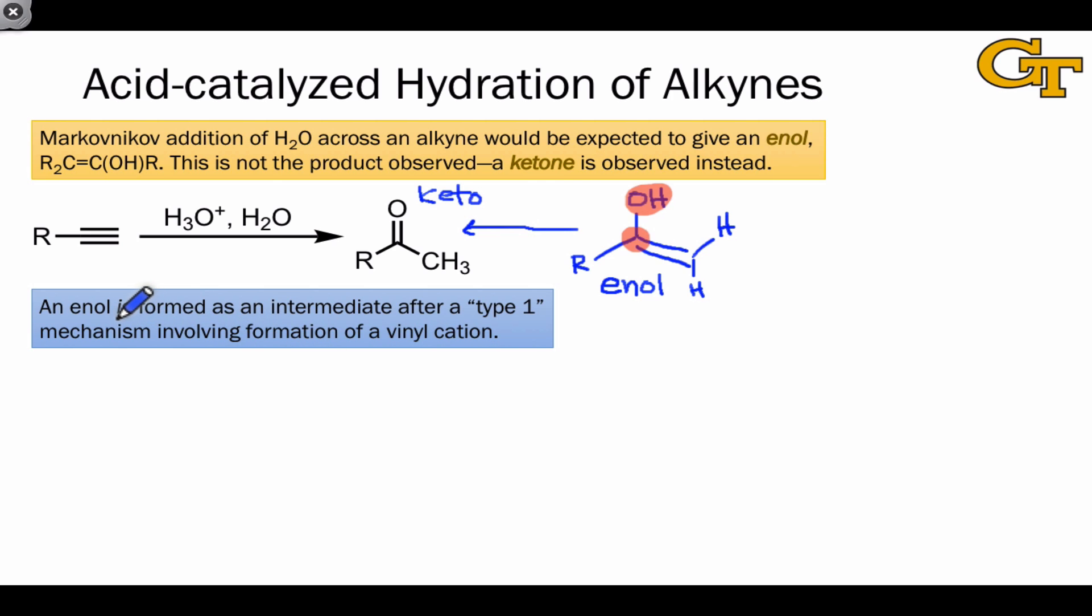The enol is formed as an intermediate in this reaction mechanism. It's a pretty traditional type 1 mechanism, as I've called it in the past, involving the formation of a vinyl cation. The mechanism is exactly analogous to acid-catalyzed hydration of alkenes, at least until we reach the enol stage.